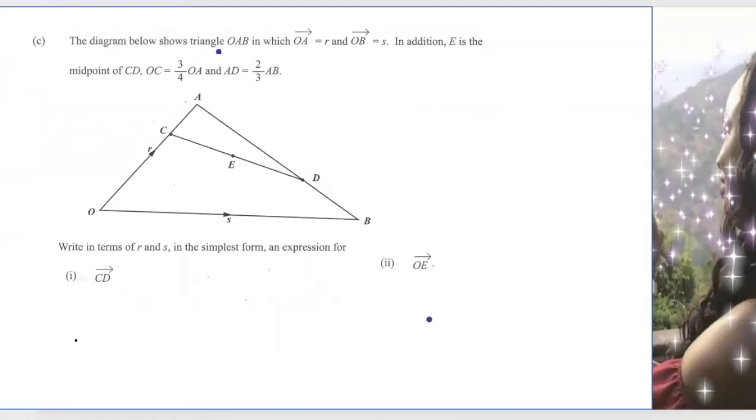The diagram below shows triangle OAB where OA is R, so all of this is R. OB is S, so all of this is S.